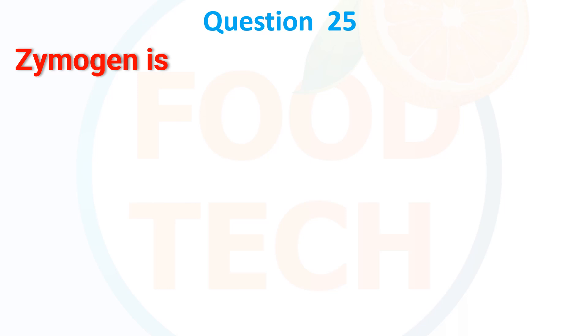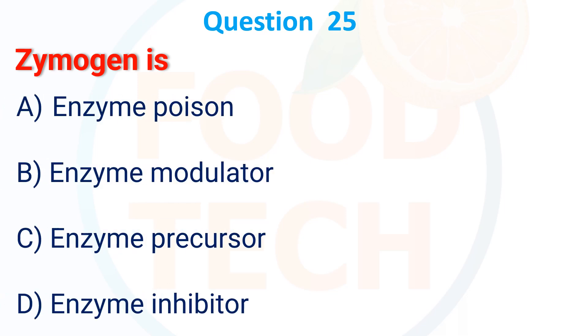Zymogen is: A. enzyme poison, B. enzyme modulator, C. enzyme precursor, D. enzyme inhibitor. The answer is C, enzyme precursor.